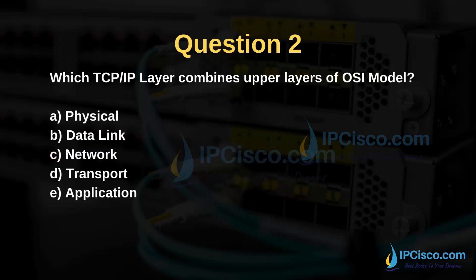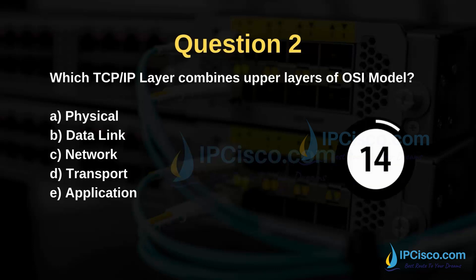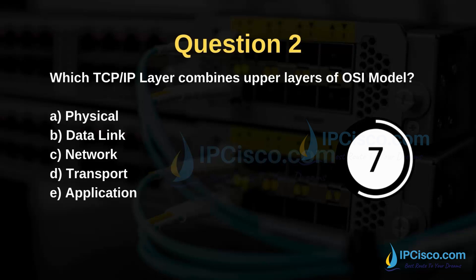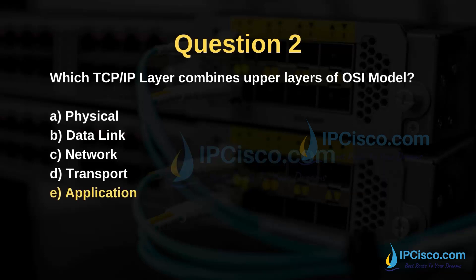Question 2: Which TCP/IP layer combines the upper layers of the OSI model? The options are physical, data link, network, transport, or application. The answer is the application layer. It combines the session, presentation, and application layers of the OSI model.